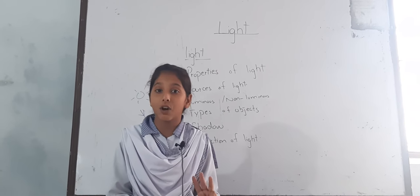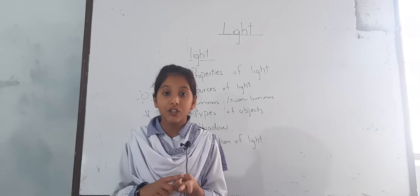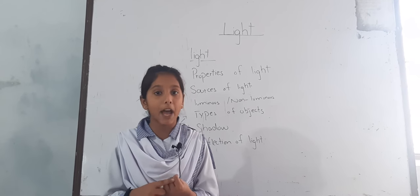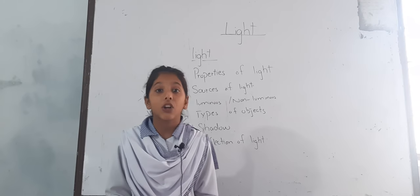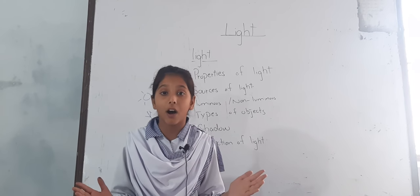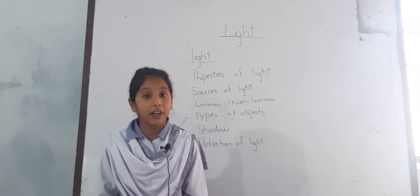There are three main types. Transparent object. First, I will tell you about transparent object. The object that allows light to pass through is called transparent object.